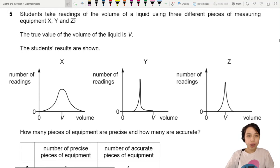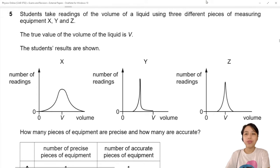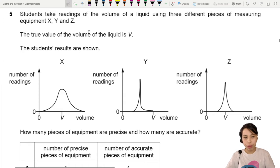Students take readings of the volume of a liquid using three different pieces of measuring equipment. The true value is V.